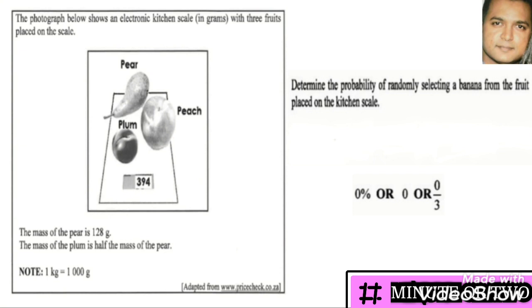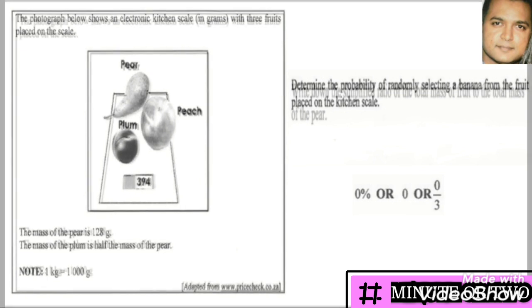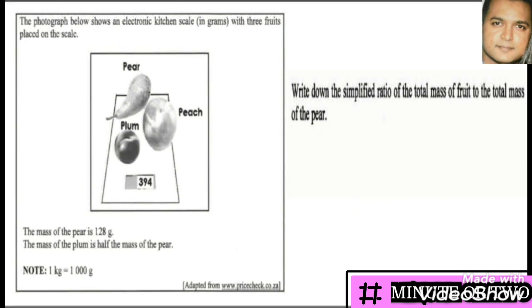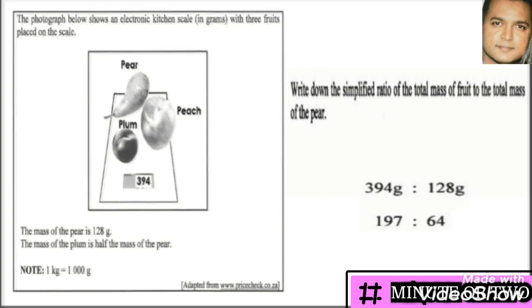Write down the simplified ratio of the total mass of the fruit to the total mass of the pear. Two important things to note: the answer must be in ratio form and it must be simplified. The total mass is 394 grams and the pear is 128 grams. Both numbers are even, so we divide both by two and arrive at 197 : 64.